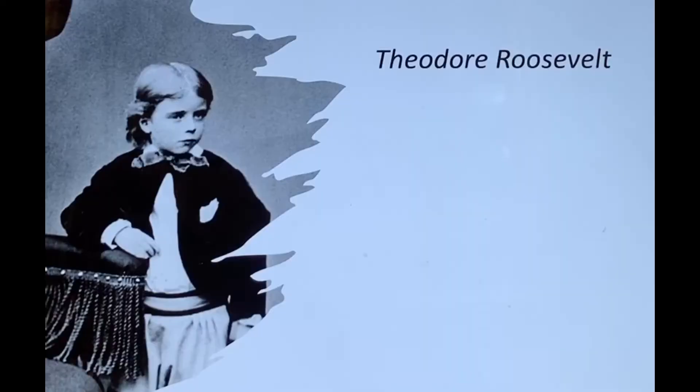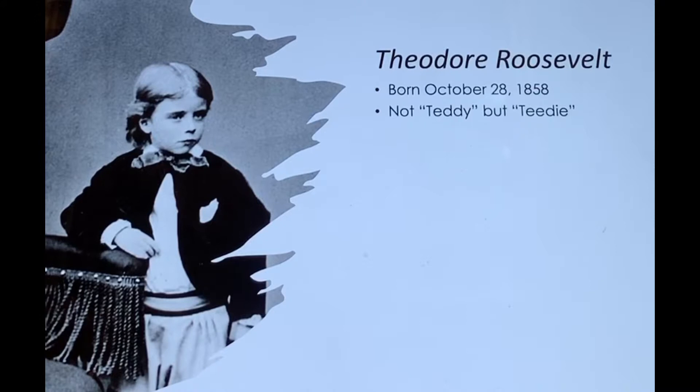Theodore Roosevelt was born on October 28, 1858, at home in New York City. No one ever called this baby Teddy. Even though today we talk about President Teddy Roosevelt, his family called him T.D., and later on in life he got the nickname T.R.